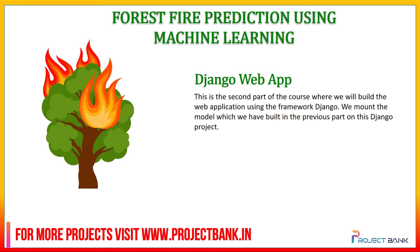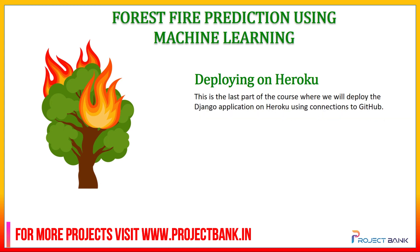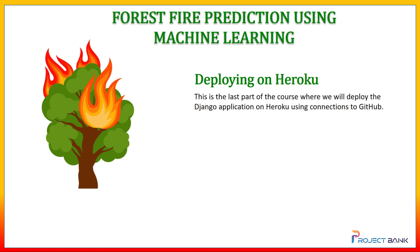Moving forward, we have the Django web application — this is the second part of the course where we build the web application using the Django framework. We mount the model built in the previous part onto this Django project. The last part is deploying on Heroku, where we deploy the Django application on Heroku using a connection to GitHub. So let's start building the machine learning model.